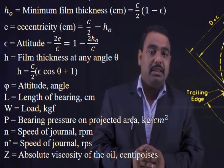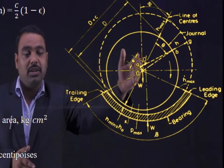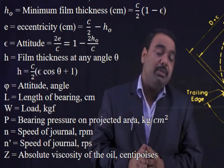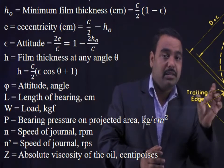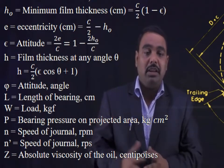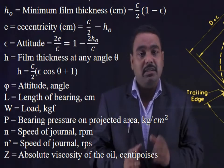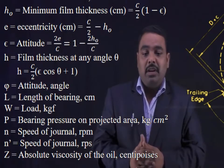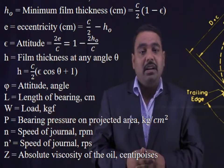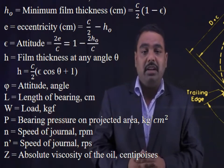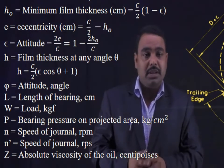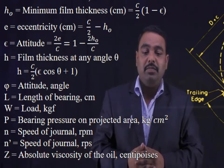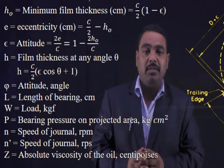L is the length of the bearing in centimeters. W is the load in kgf. P is the bearing pressure on projected area. The projected area is L into D, so the bearing pressure P is calculated as W divided by L into D. N is the speed of the journal in RPM, and N dash is the speed in RPS — calculated as N divided by 60. Z is the absolute viscosity of the oil in centipoise. These are the nomenclature terms.